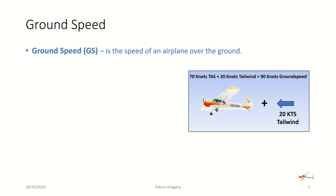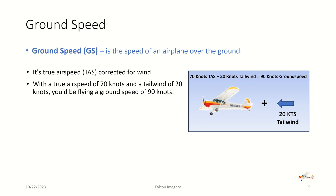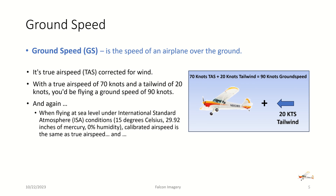Next is ground speed. Ground speed is the speed of an airplane over the ground — it's true airspeed corrected for wind. With a true airspeed of 70 knots and a tailwind of 20 knots, you'd be flying at a ground speed of 90 knots. And again, when flying at sea level under international standard atmospheric conditions — 15 degrees Celsius, 29.92 inches of mercury, and 0% humidity — calibrated airspeed is the same as true airspeed. And if there's no wind, it is also the same as ground speed.